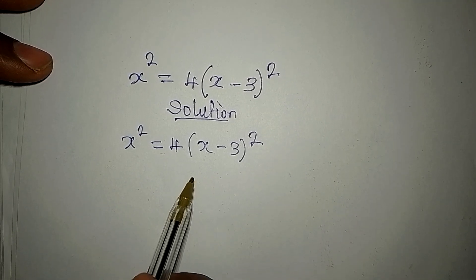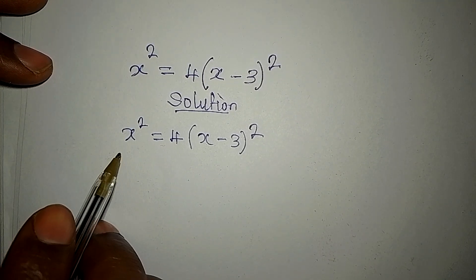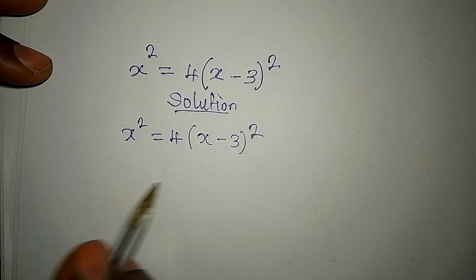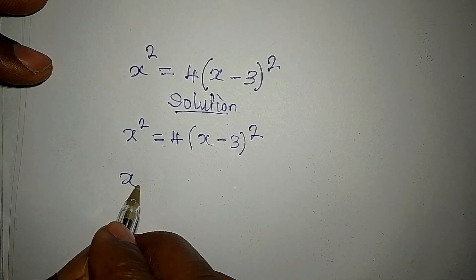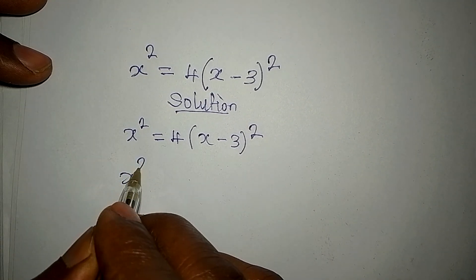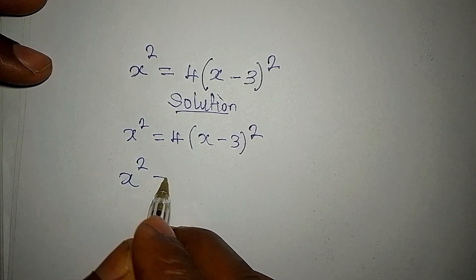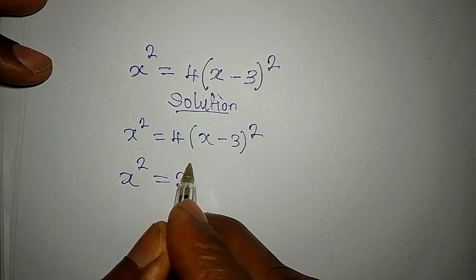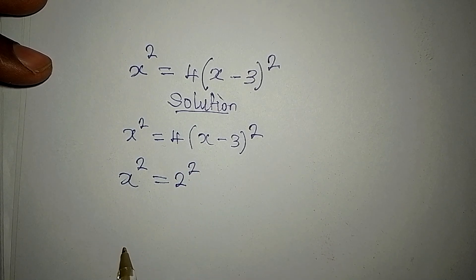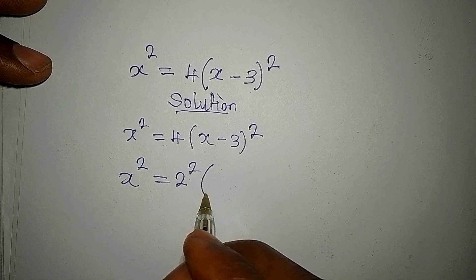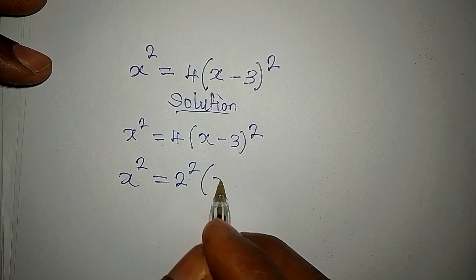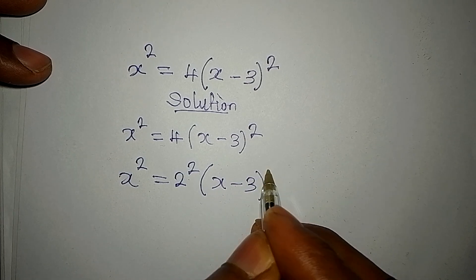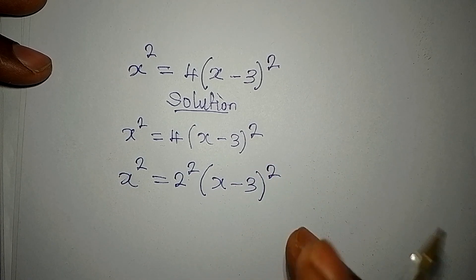Now let's look at this problem together. We have x squared, and this 4 here is the same as 2 squared. Then we open the bracket and have x minus 3 to the power of 2.